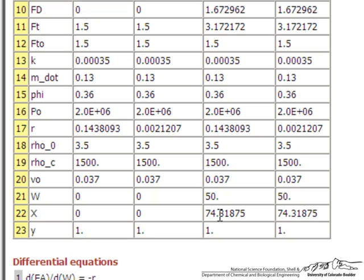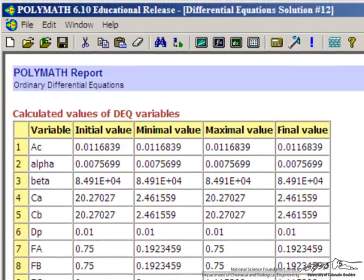And before where we got a conversion of 68.4%, now you see we get a conversion of 74%. So it makes a quantitative difference, but not a huge difference in this case, whether or not you include pressure drop. If you have a larger pressure drop, then it can make a big difference in your final result.